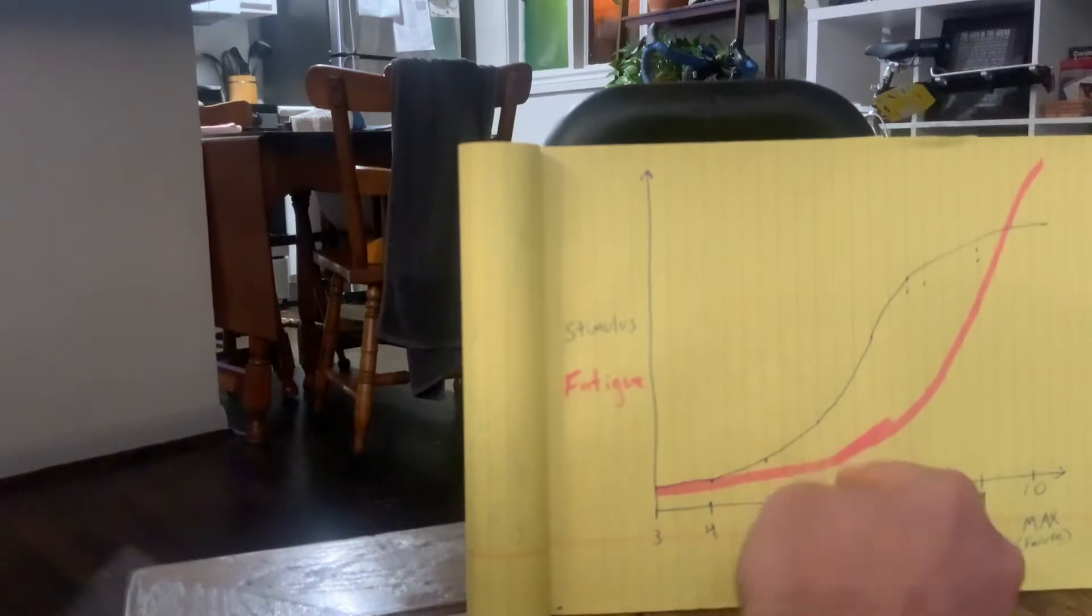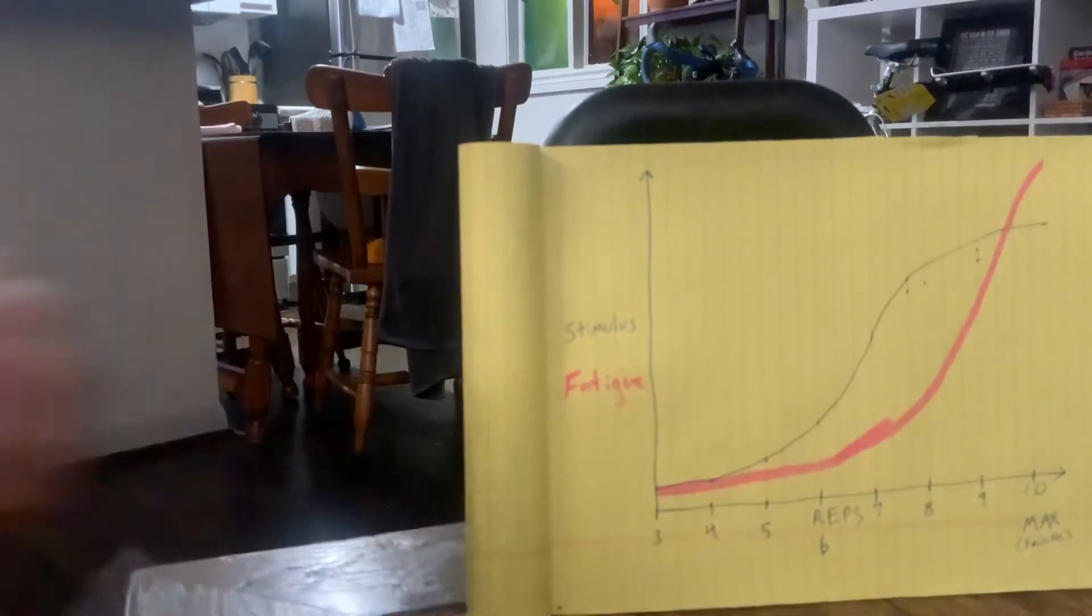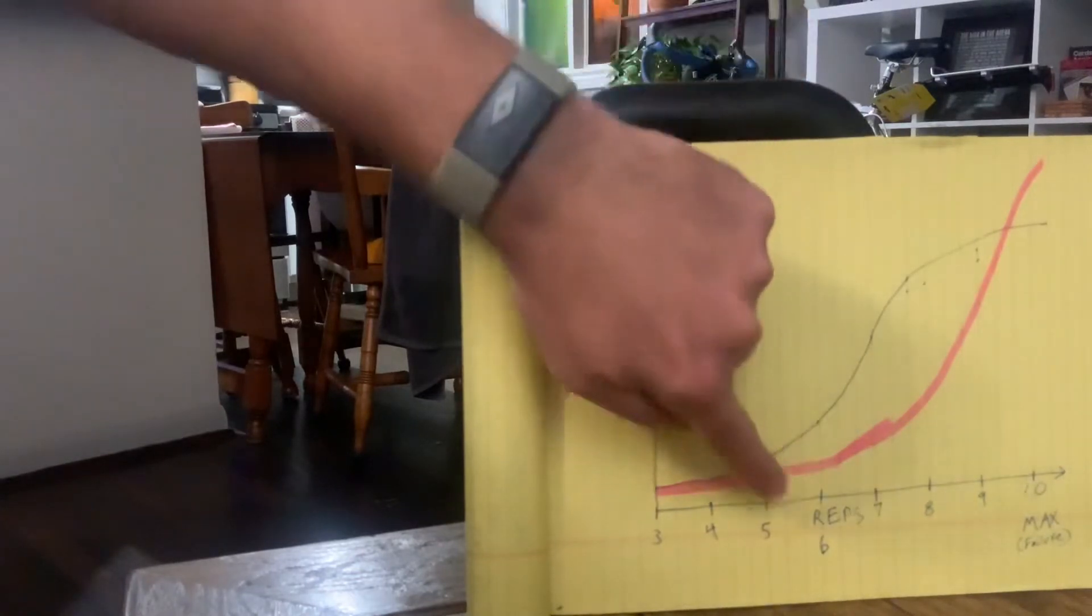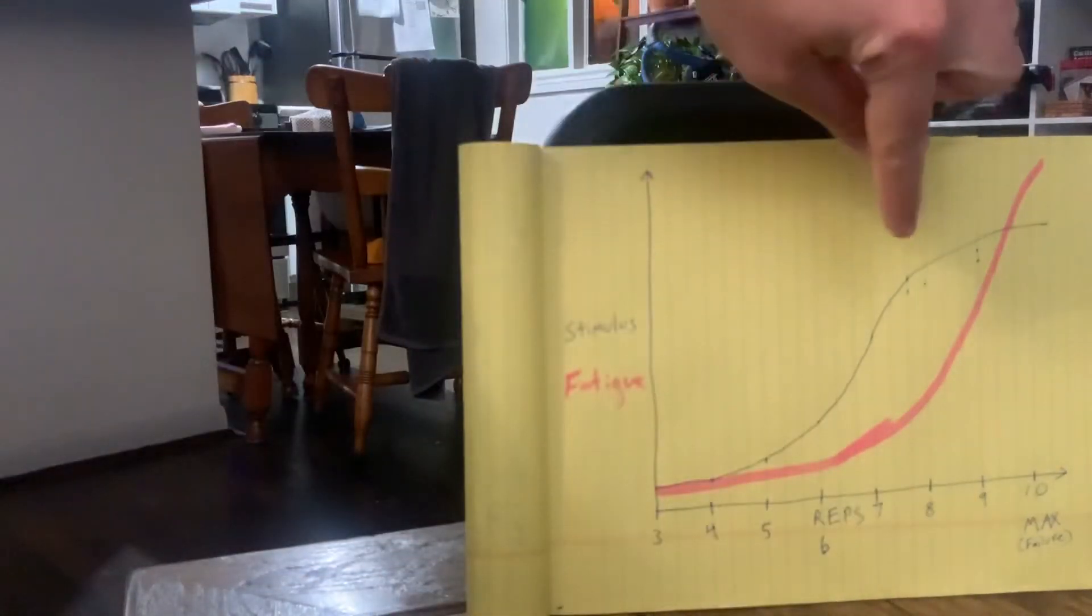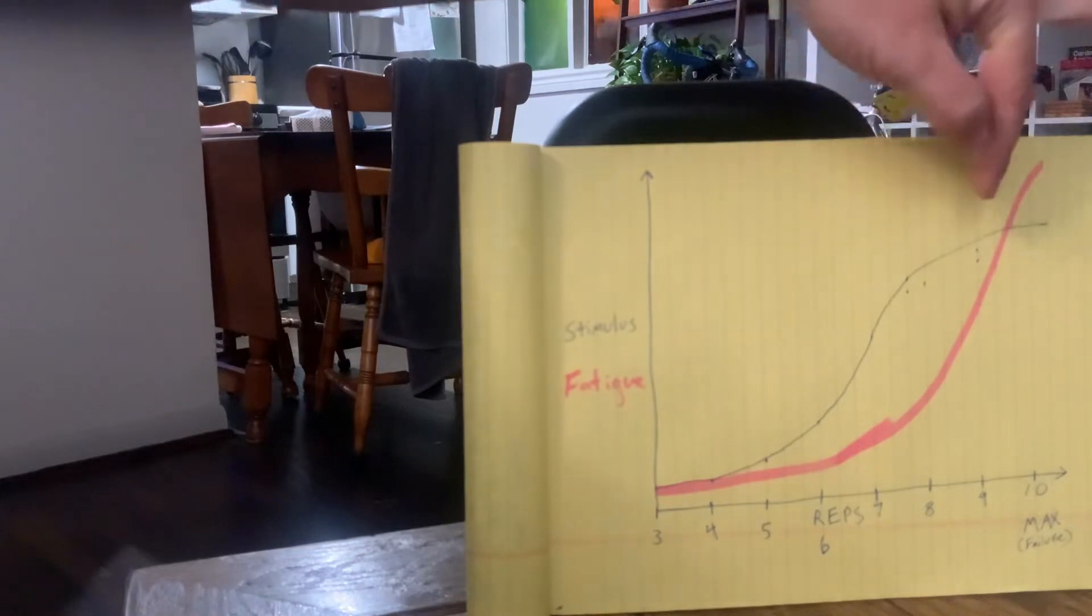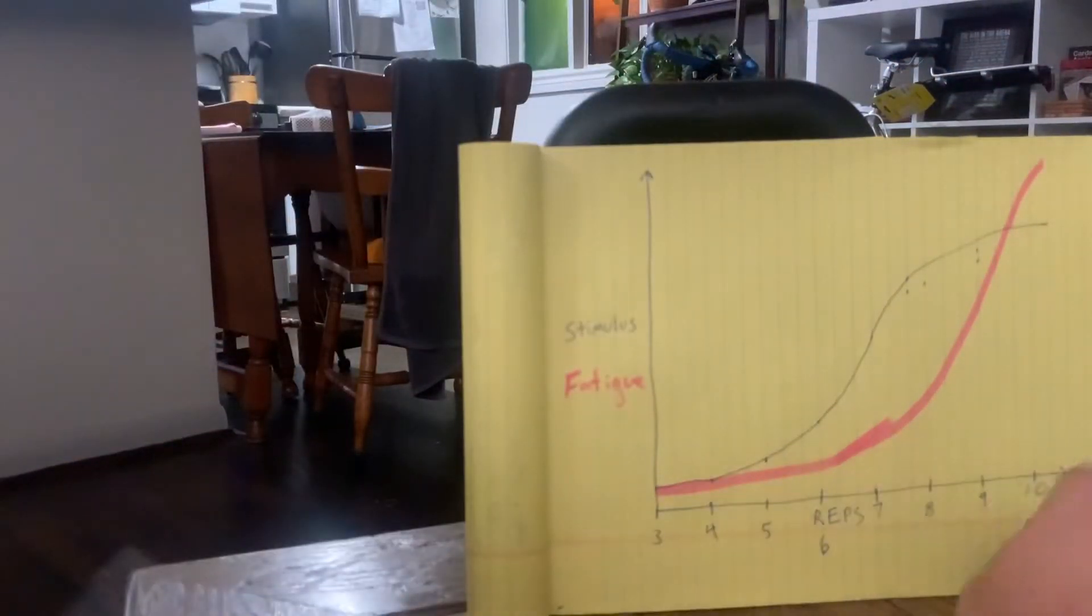But once you go from five to six, it's an uptick, and then from six to seven, or that would also be four IR to three IR, the curve starts to go up. So our stimulus is drastically increasing here in this range. And then seven, eight, still gaining stimulus at a very high rate. Then once you see eight to nine and nine to ten, it starts to level off a little bit.